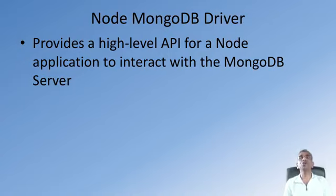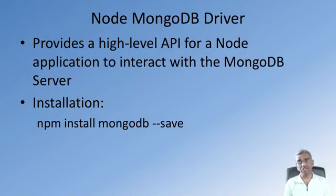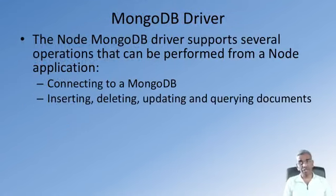The Node MongoDB driver provides a high-level API that enables you to access the Mongo server from within your Node application, and it provides you with many methods to interact with your Mongo server. To install the MongoDB driver, which is a Node module, we type npm install mongodb --save to install it within our application. Thereafter, we require this MongoDB driver in our Node.js application and make use of it to access the MongoDB server.